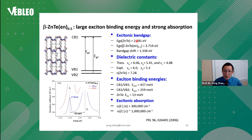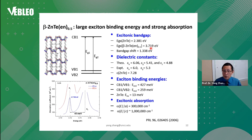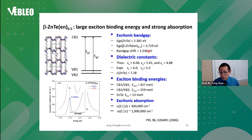In terms of excitonic bandgap, for zinc telluride it was measured very precisely at a known value, and for this hybrid we can also get a very precise value to a fraction of meV. You get a large bandgap shift of over 1.3 eV — more than any quantum dot you can get.